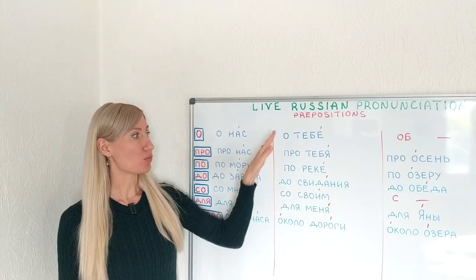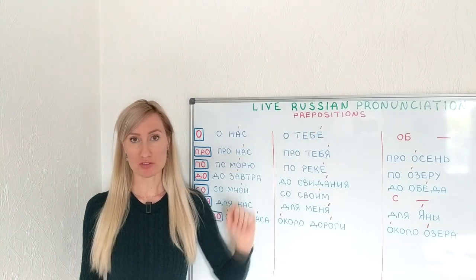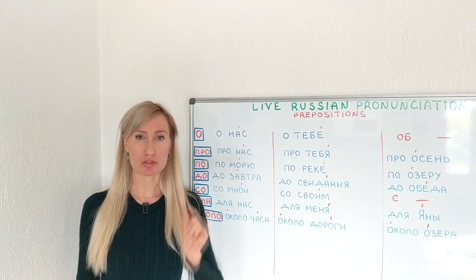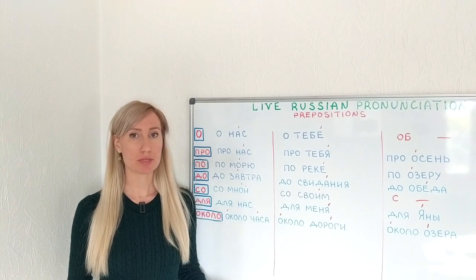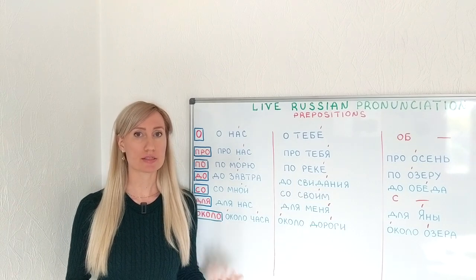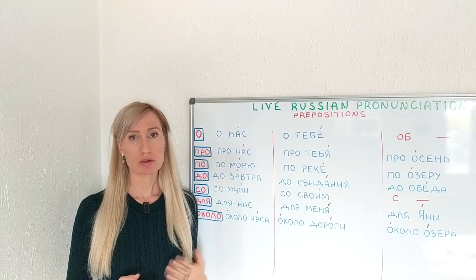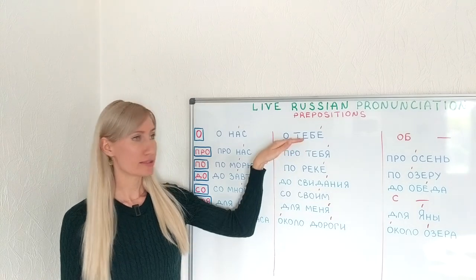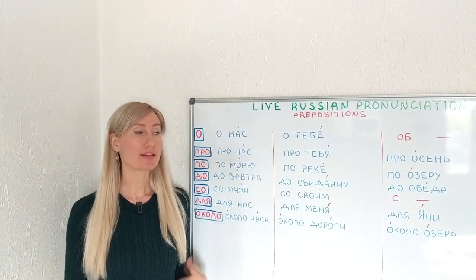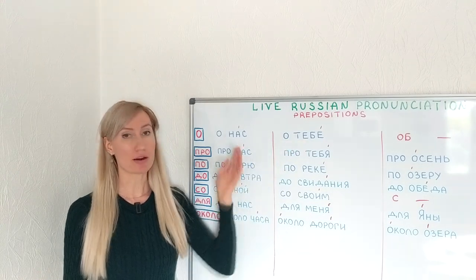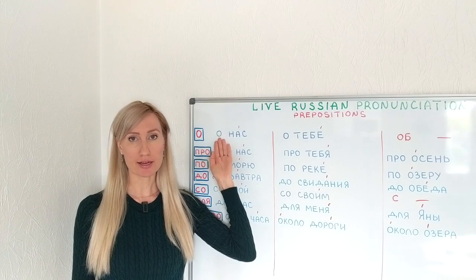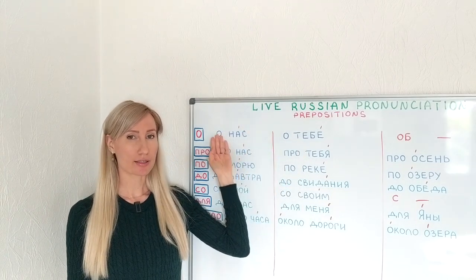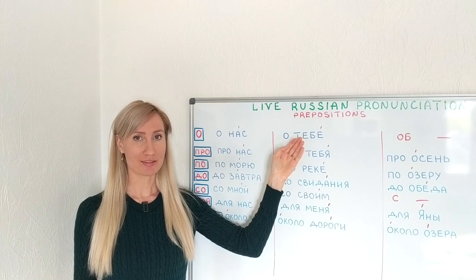But when it's further from the stressed syllable, it will sound a little bit shorter. А ТЕБЕ — about you. Now let's compare: О НАС versus А ТЕБЕ. О НАС, А ТЕБЕ.